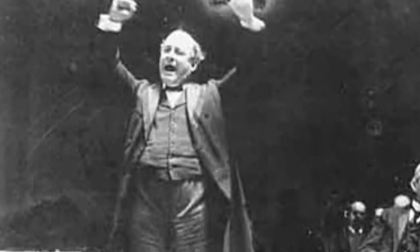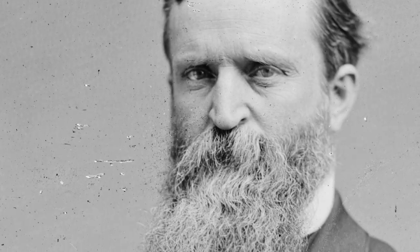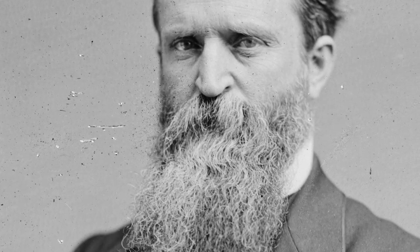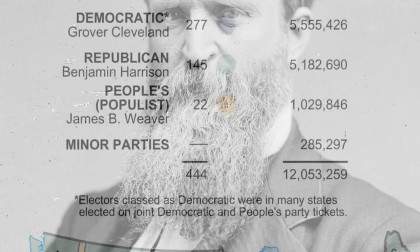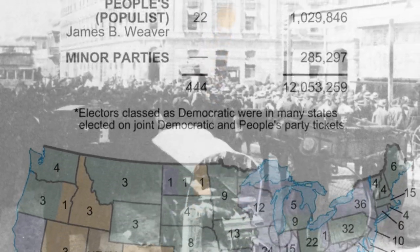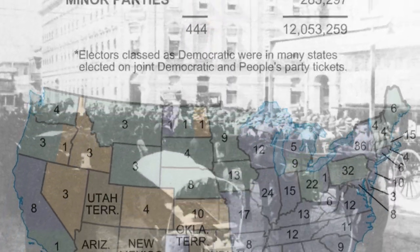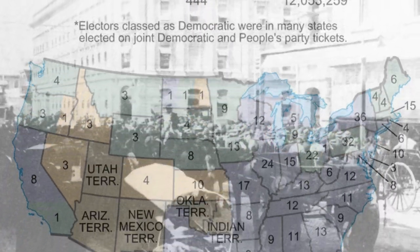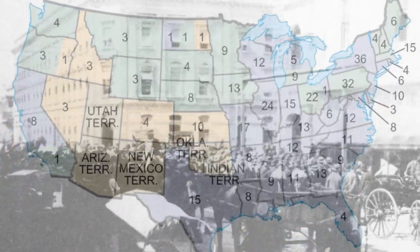In fact, support for populism was so great that a populist presidential candidate, James B. Weaver, garnered more than one million votes. Although the number may pale in comparison to the main parties, keep in mind that this is the most successful a third party has been up to that point in American history.